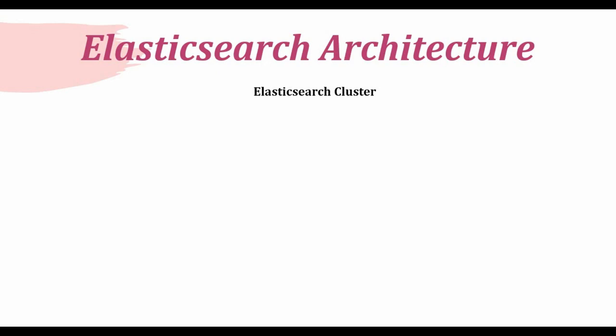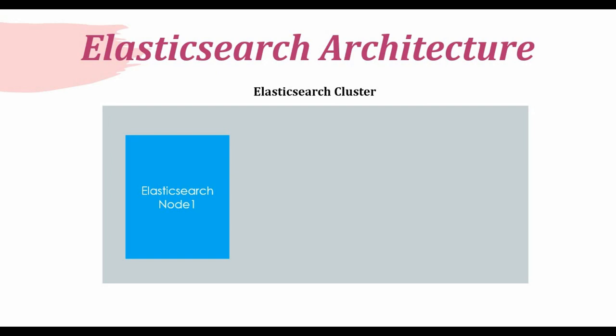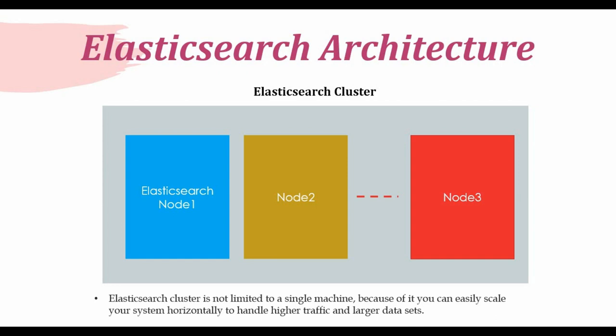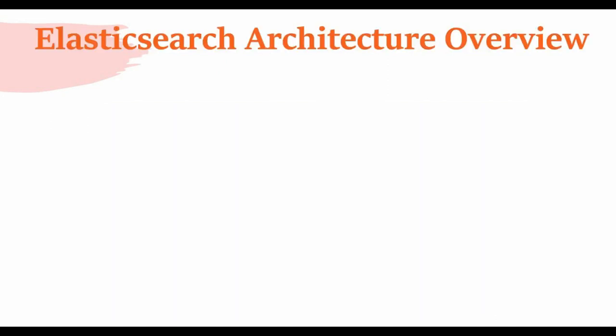In Elasticsearch, you can have a cluster of nodes or a single node. In a cluster, you'll have multiple Elasticsearch nodes — node one, node two, and so on. There's no limitation that Elasticsearch has to run on a single machine, so you can easily scale up to handle higher traffic and larger data sets. A node is a single Elasticsearch installation instance; combine multiple nodes using clustering and it becomes an Elasticsearch cluster, with one becoming the master.